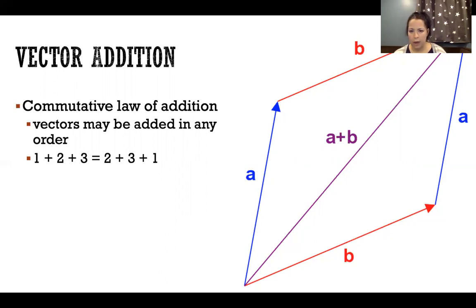b plus a on the right side. That purple line in the center represents a + b, or that could be b + a in any order. It's the same thing.